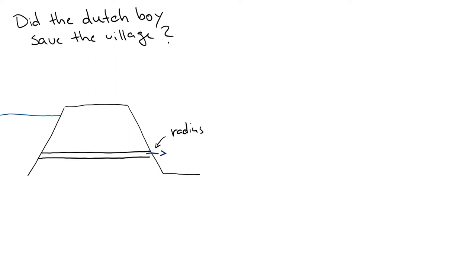We need to know the length of the conduit, and we need to know how much pressure or force is there to drive water through it. In this example, it is simply the height of the water table above the conduit that determines the pressure difference, and the height here is 5 meters.